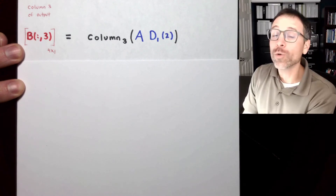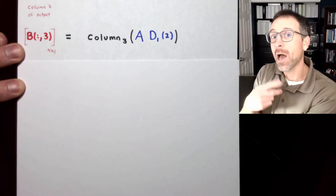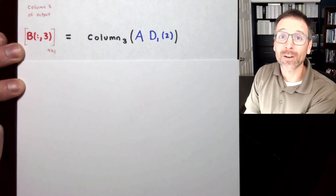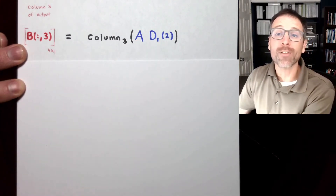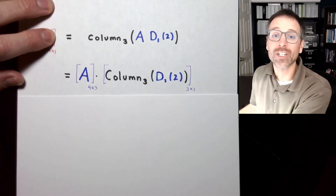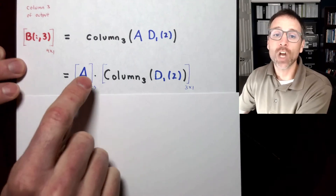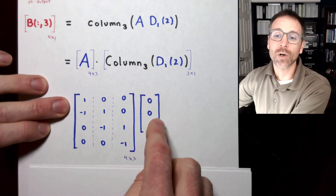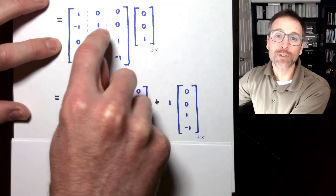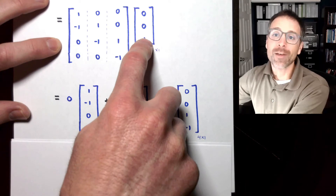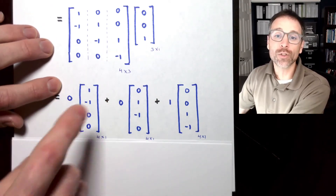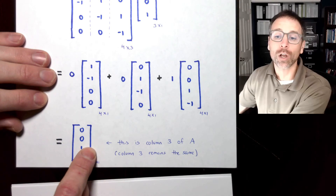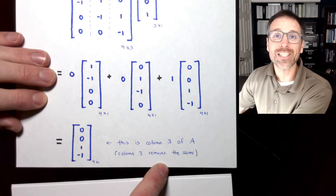Let's do the third column — pause and do it for yourself, then check. The most important thing is what you do; all of this is designed for active learning. Column 3 of our output is A times column 3 of the right-hand dilation matrix, which is [0, 0, 1]. We take the first entry times the first column, the second entry times the second column, and the third entry times the third column. The two zeros are annihilated, and we're left with 1 times the third column — identical to the third column of A, which is exactly what we wanted.